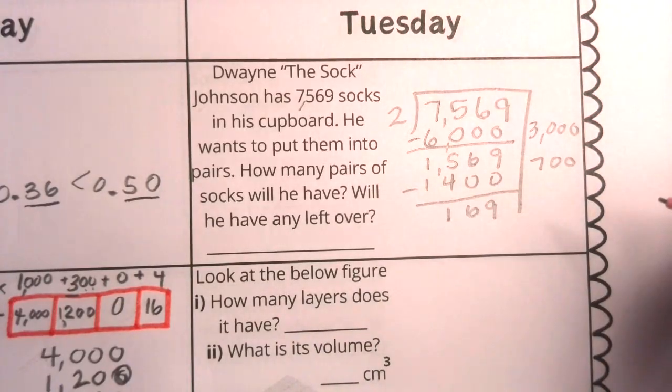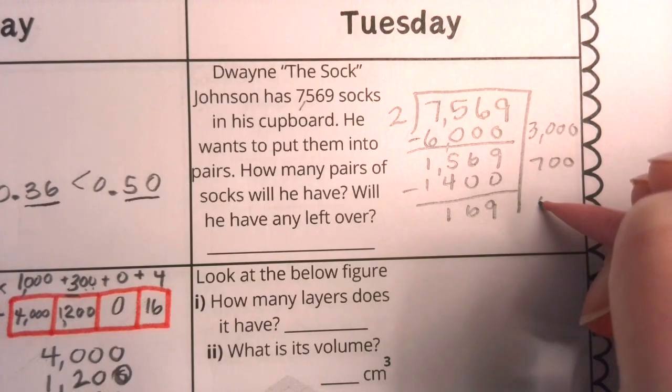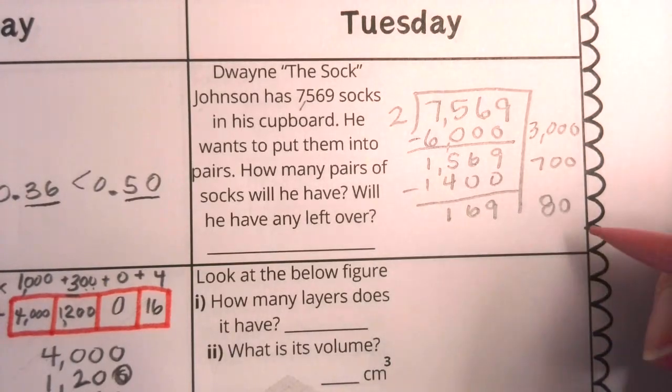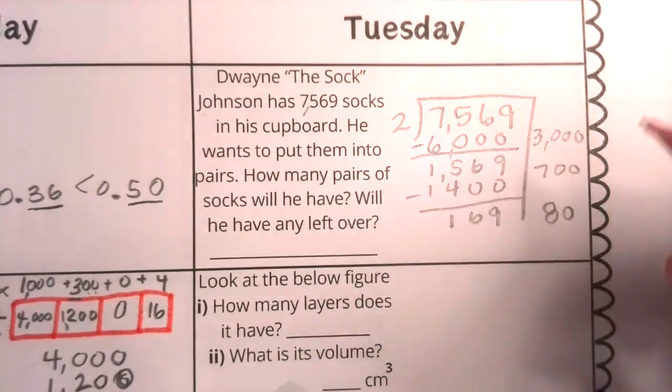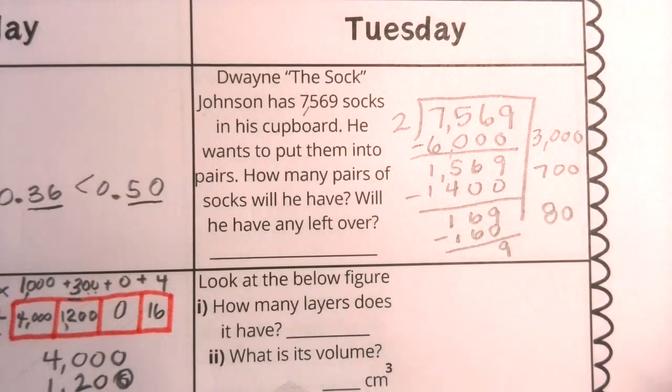So now I only have 169 more socks to use up. What could I do now? What about if I make 80 pairs? 80 times 2 is going to be 160 socks. So now I only have 9 socks left over.